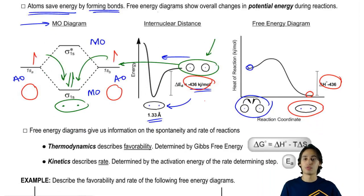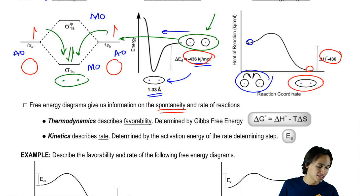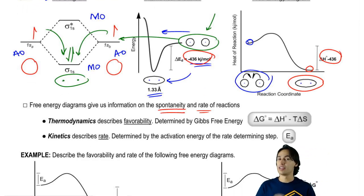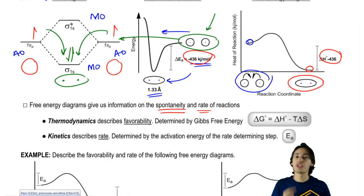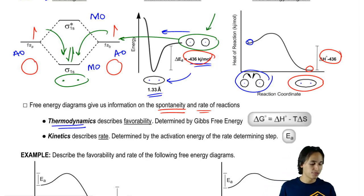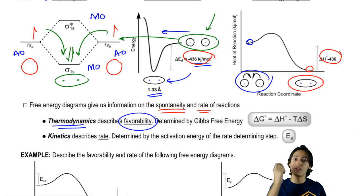Free energy diagrams give us information on spontaneity and rate of reactions. This has to do with thermodynamics and kinetics. Thermodynamics is what we call spontaneity and that describes the favorability of a reaction. When I say that something's spontaneous, that means that it's favorable, it wants to happen by itself. The equation that we use to understand thermodynamics is your Gibbs free energy. Delta G equals delta H, which is the enthalpy, minus the temperature times the entropy or the delta S.